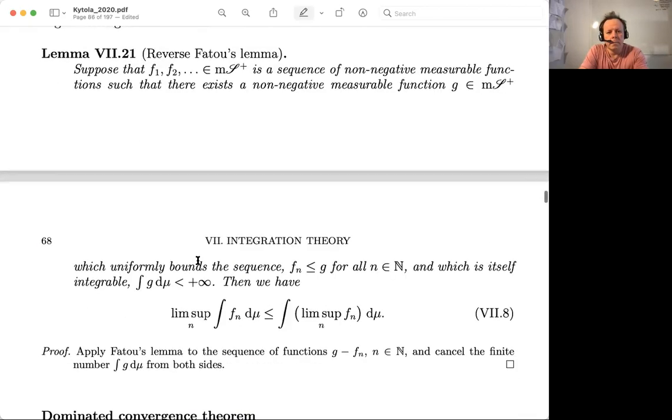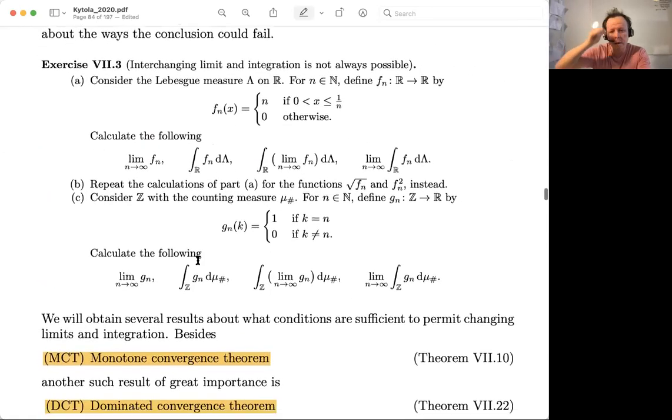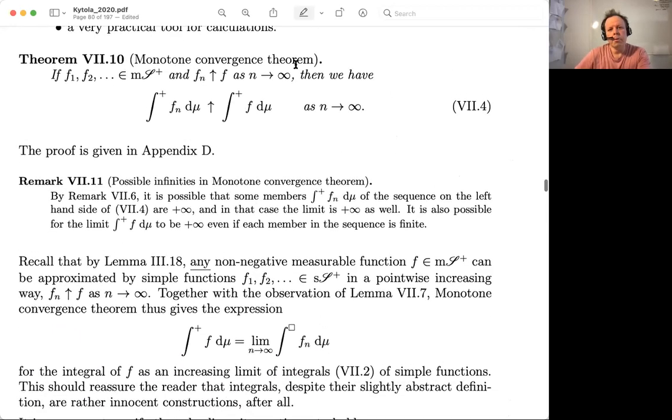And then let's see, was there something which we skipped here. It's 7.10, so we should go there. The other important theorem is called monotone convergence theorem. And that's 7.10 in the lecture notes.